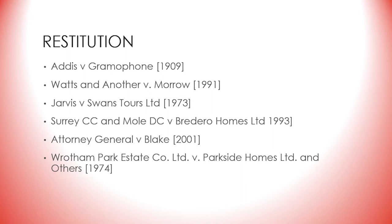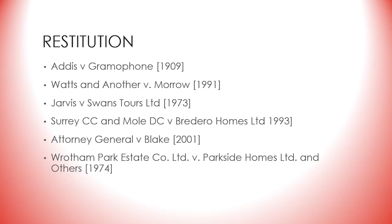However, there are some mechanisms that will prevent the perpetrator of a breach from gaining an unjust reward. One such mechanism is an account of profits, as seen in Attorney General v Blake from 2001. The case involved a former member of the Secret Intelligence Service who later became a Soviet agent; in violation of his contractual obligations to the British government, he wrote a book and entered into an agreement with a UK publisher. The Crown claimed whatever payments were due from the publishers. The court held that in exceptional cases, when normal remedies were inadequate to compensate for breach of contract, the court could order that the defendant account for all profits either received or to which he is entitled.